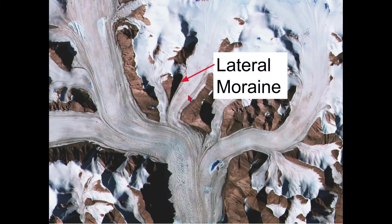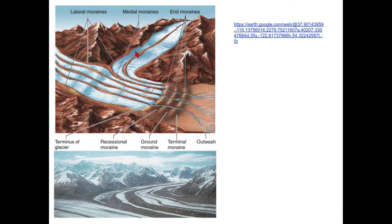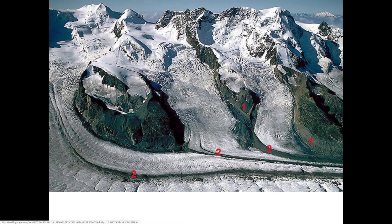Here's a top view of a glacier showing lateral moraines on the sides and medial moraine in the middle. Here's another diagram showing lateral, medial, terminal, end, and recessional moraines. There's a link to Google Earth with good examples of lateral and medial moraines. In this view, label 1 marks lateral moraine and label 2 marks medial moraines.